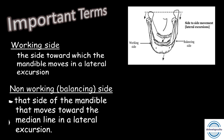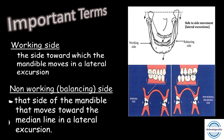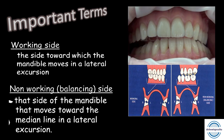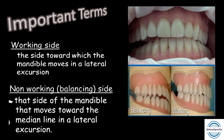Working side contacts means the contact between teeth on the working side, and balancing side contacts means the contact of teeth on the non-working or balancing side. In natural dentition, when we move the mandible towards the right side, the right side teeth come into contact — so we have working side contacts. In a complete denture, when we give bilateral balanced occlusion, there should be contact on both the working side and the balancing side for stability of the complete denture.